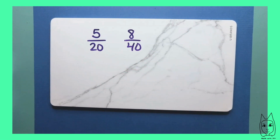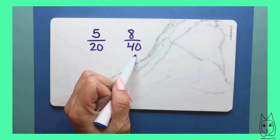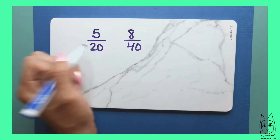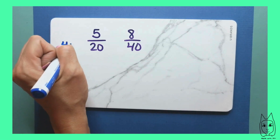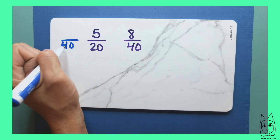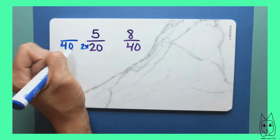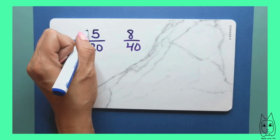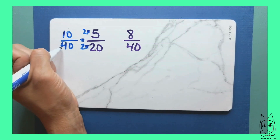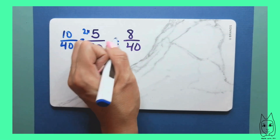Let's look at five-twentieths and eight-fortieths. Because this is talking about 20 equal parts to make a whole, and this is talking about 40 parts to make a whole, I can go ahead and make this one have a denominator of 40 so I can compare them to see if they're equivalent. 40 is 20 times 2, so I need two of those 20s to make 40. That means I would need five times two, giving me 10 out of 40. Ten out of 40 is not equivalent to eight out of 40, so these are not equivalent.